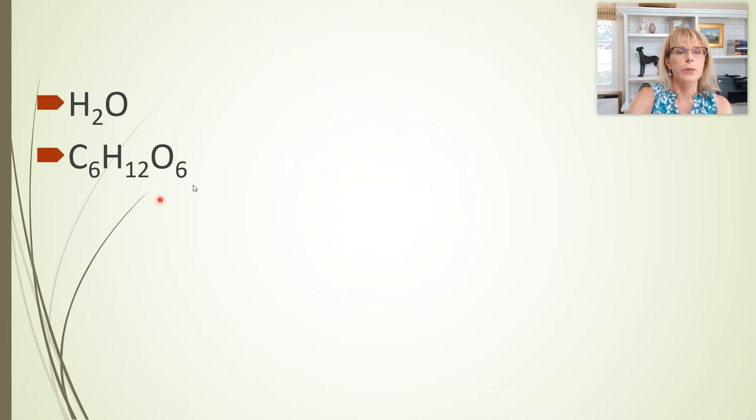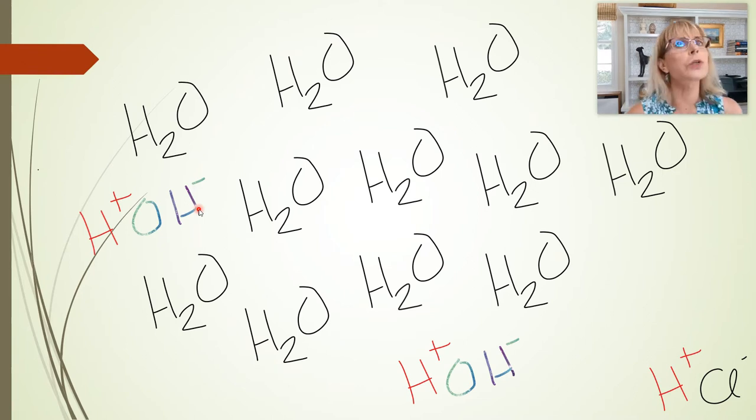So this is a molecular formula, a real simple molecular formula. You need to know what it means. When we write H2O like this, we are saying that this is a molecule that's made up of two atoms of hydrogen and one atom of oxygen. That's what H2O means. This is a molecule that's made up of six atoms of carbon, 12 atoms of hydrogen, six atoms of oxygen. We'll get back to that in a little bit.